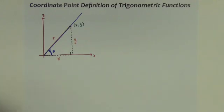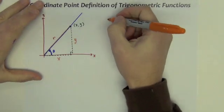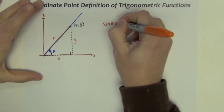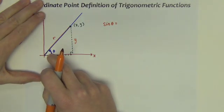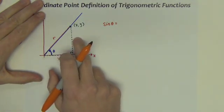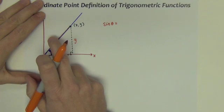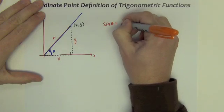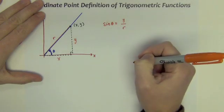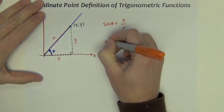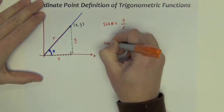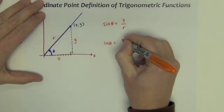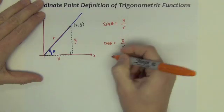So here's our coordinate point definitions. The sine of this angle theta, instead of calling it opposite divided by hypotenuse, we can call it y divided by r. The cosine of theta, instead of calling it adjacent over hypotenuse, we can call it x over r.